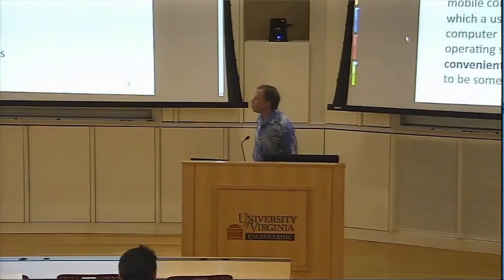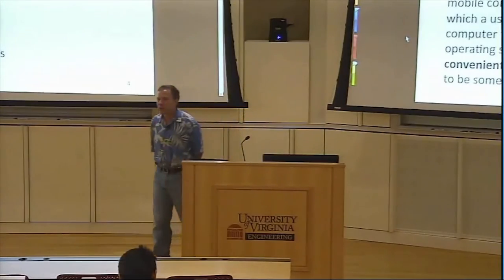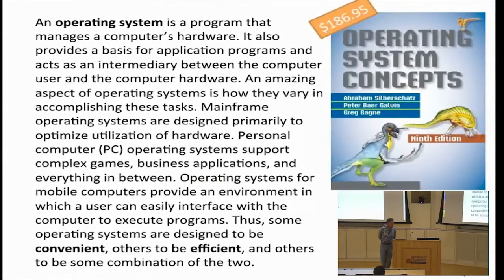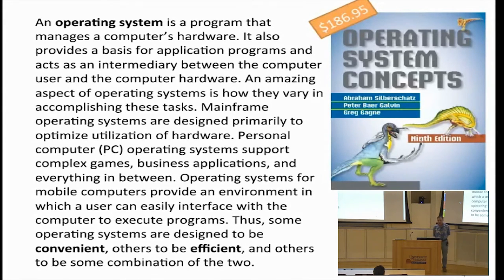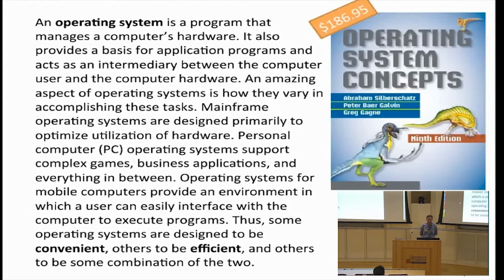We want to get a definition so we understand what we're talking about. Let's look at some definitions from textbooks. Here's one from what's sometimes called the dinosaur book — it's an awfully long one. An operating system is a program that manages a computer's hardware, and then there's discussion about how different operating systems are. The conclusion is that some operating systems are designed to be convenient, others to be efficient, and others to be some combination of the two.